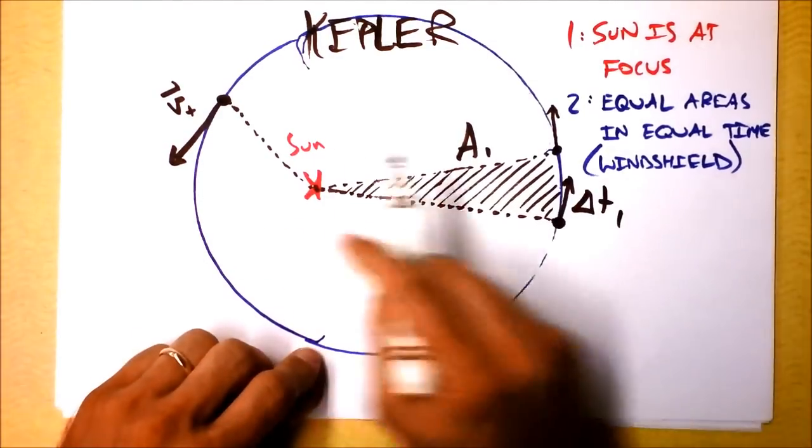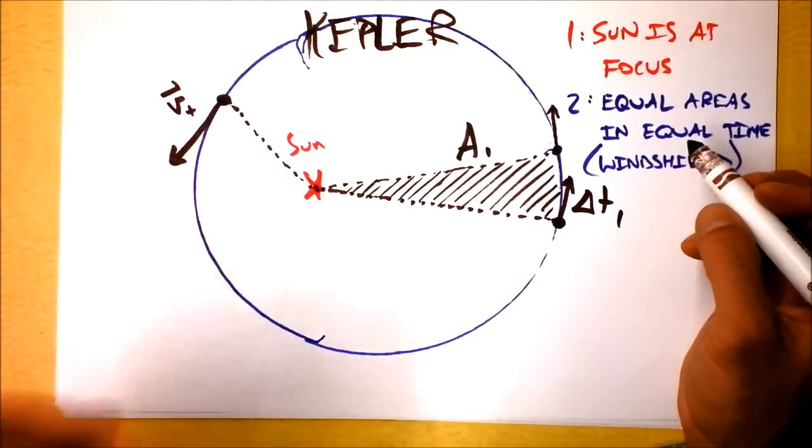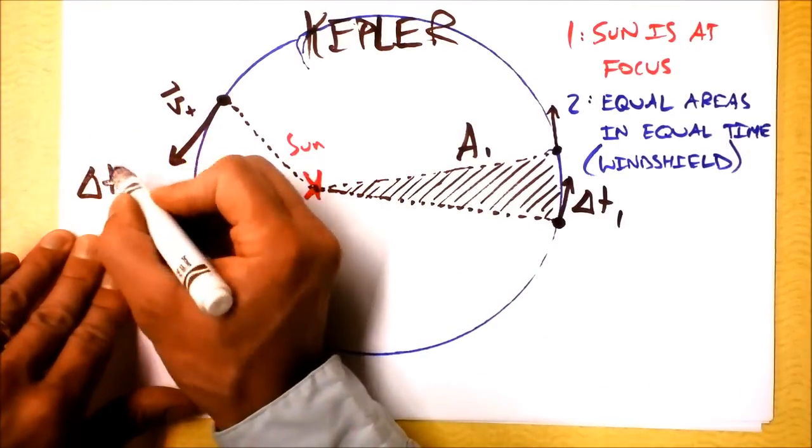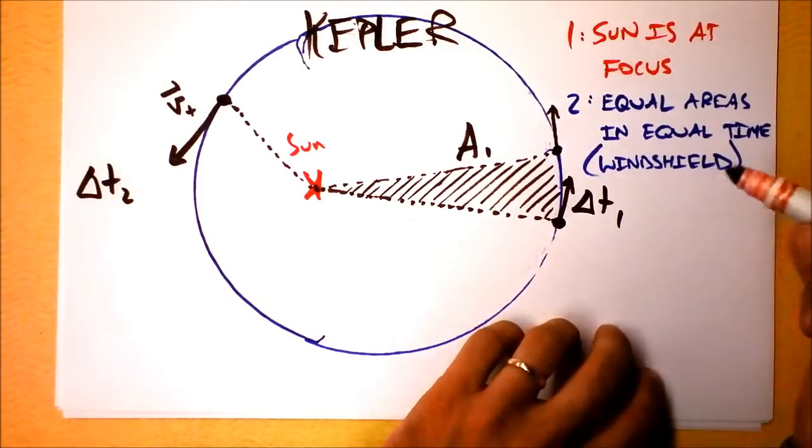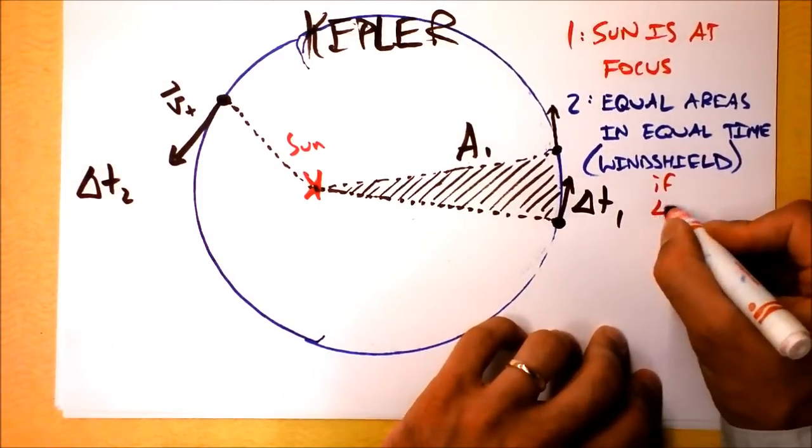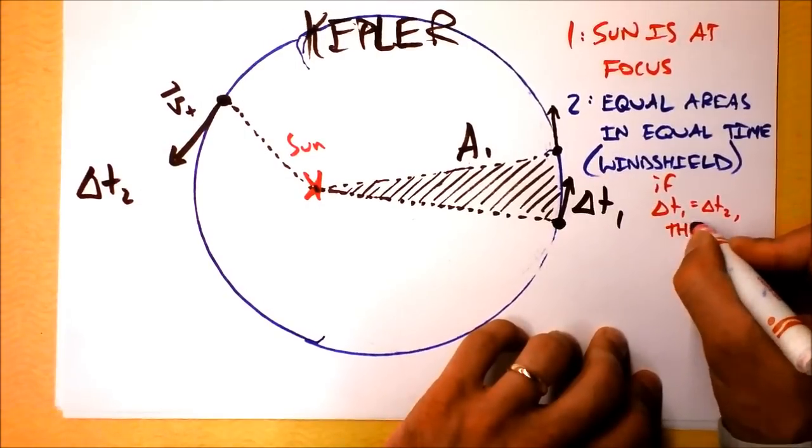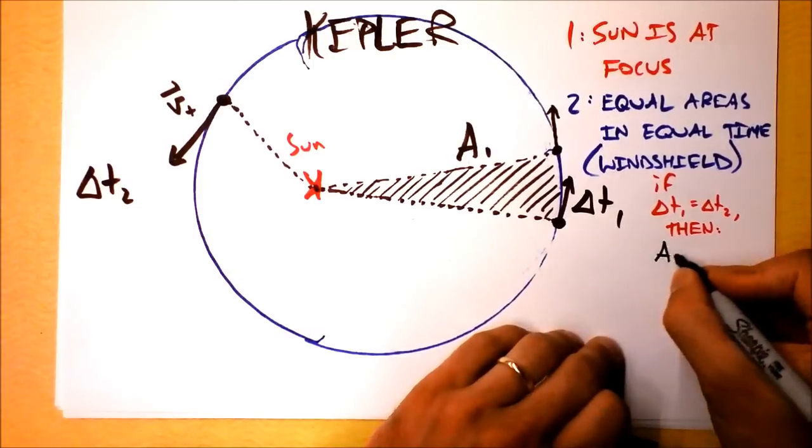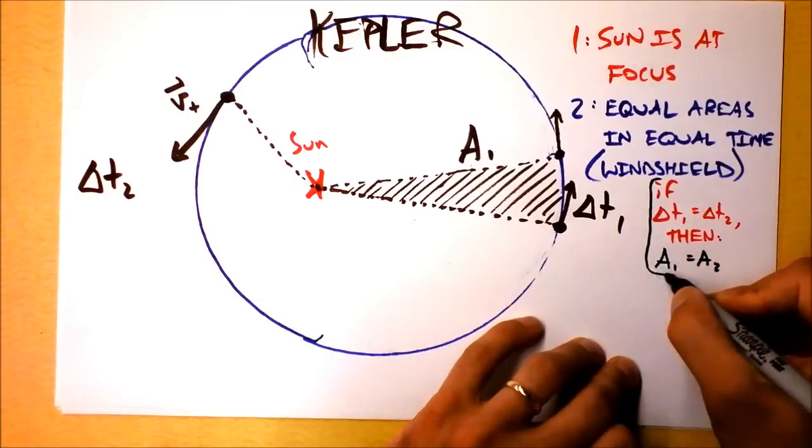And we can do a little windshield wiper business right here. And the cool thing about Kepler's second law is he observed that for ellipses, where the sun is at one of the foci, the area that swept out in the same amount of time, let's call it delta T2, but then we'll make the statement that delta T1 equals delta T2. If delta T1 equals delta T2, then A1 equals A2. That is Kepler's second law also.